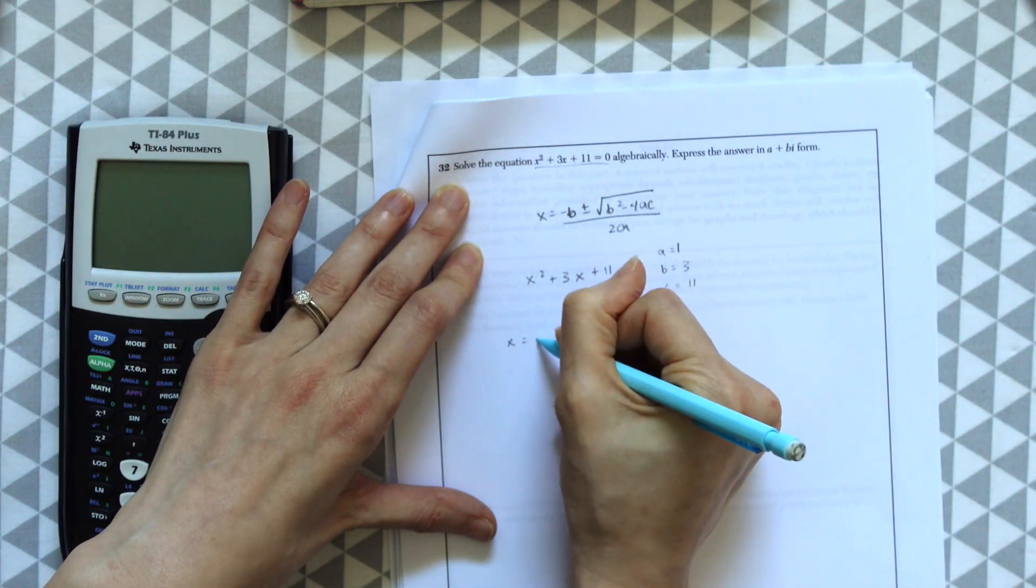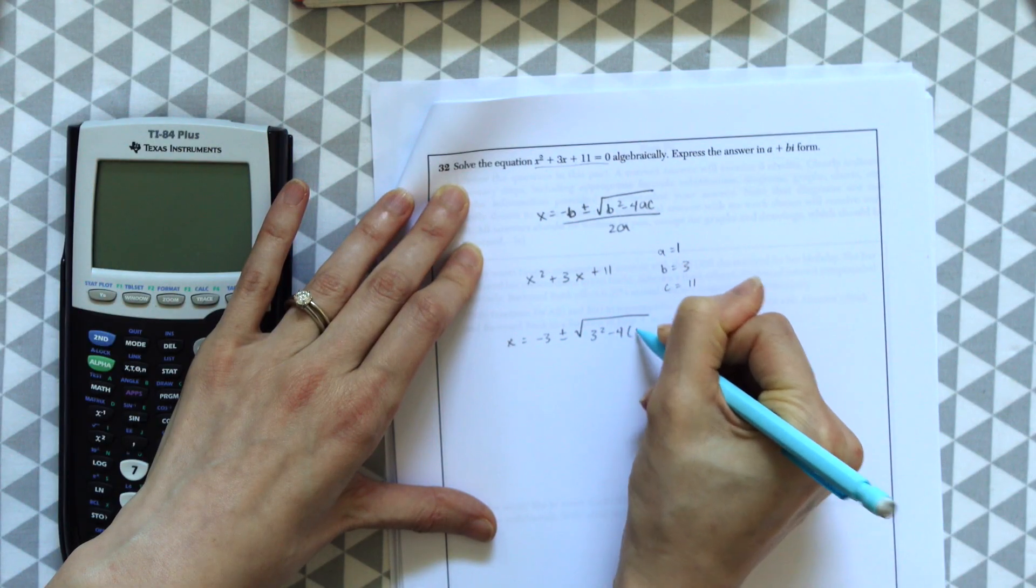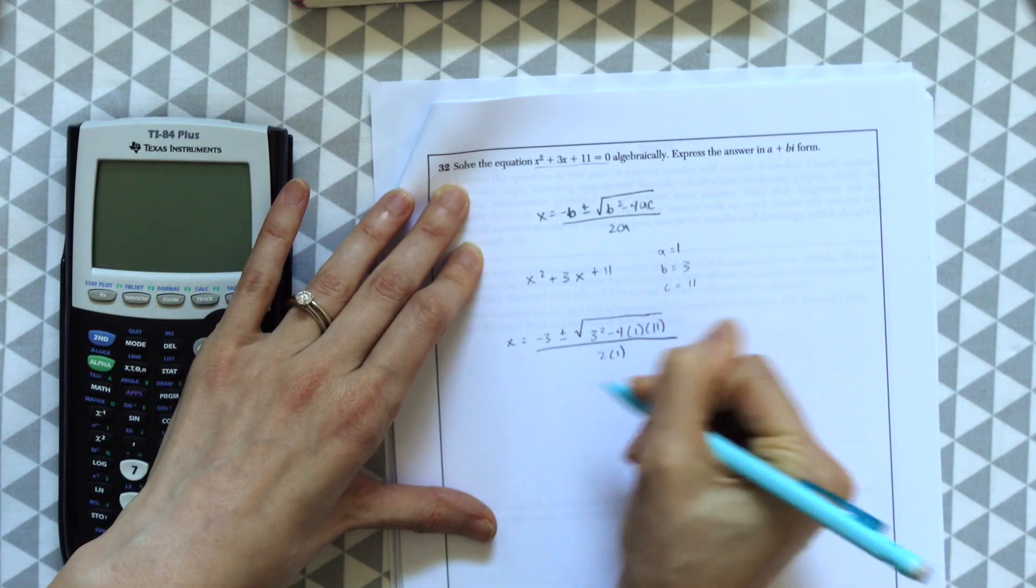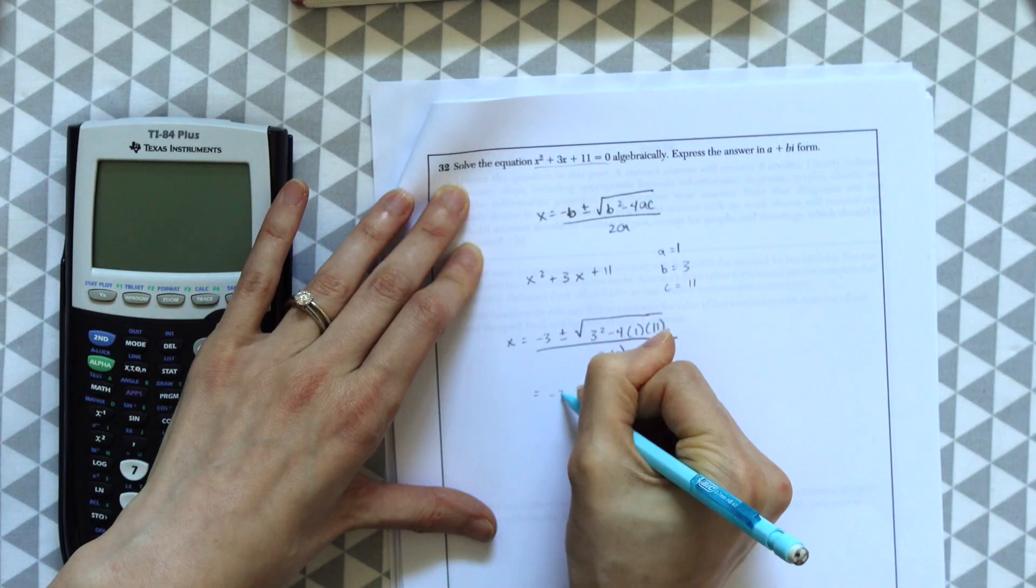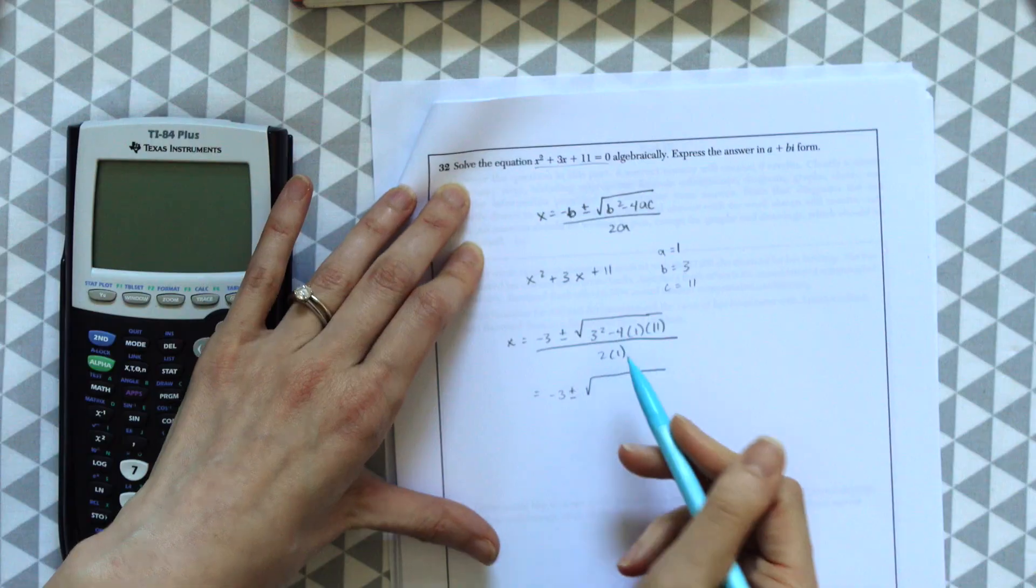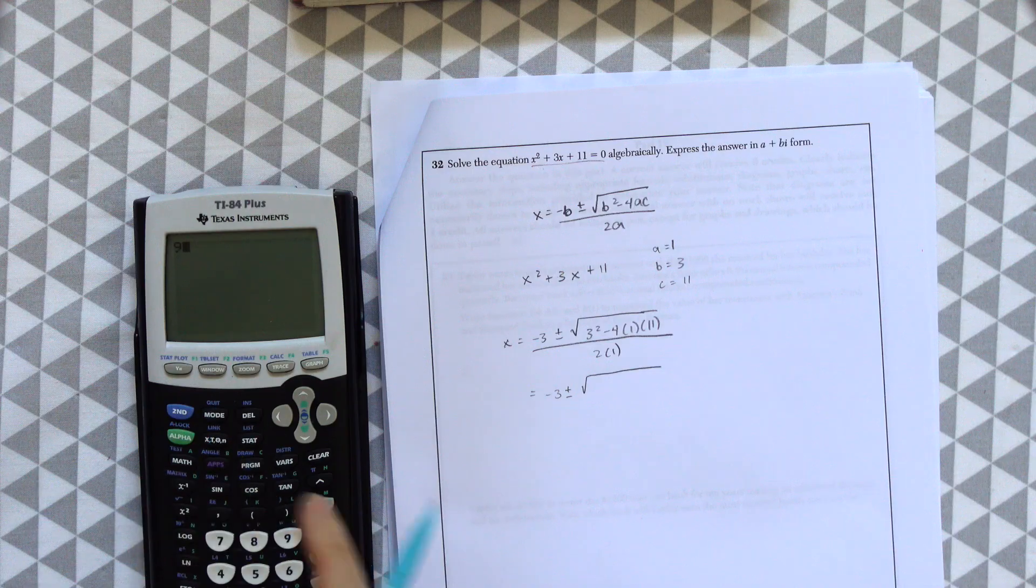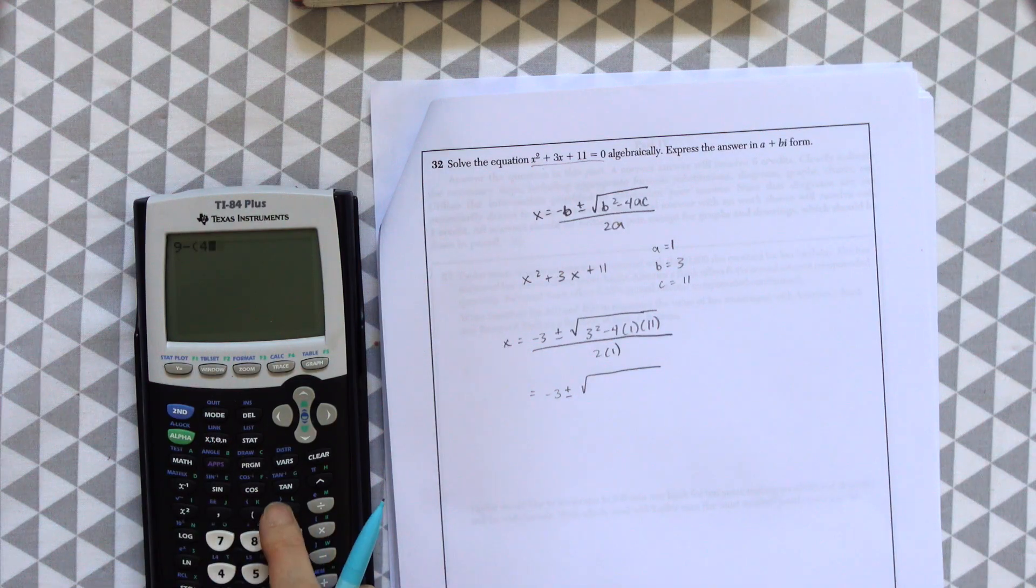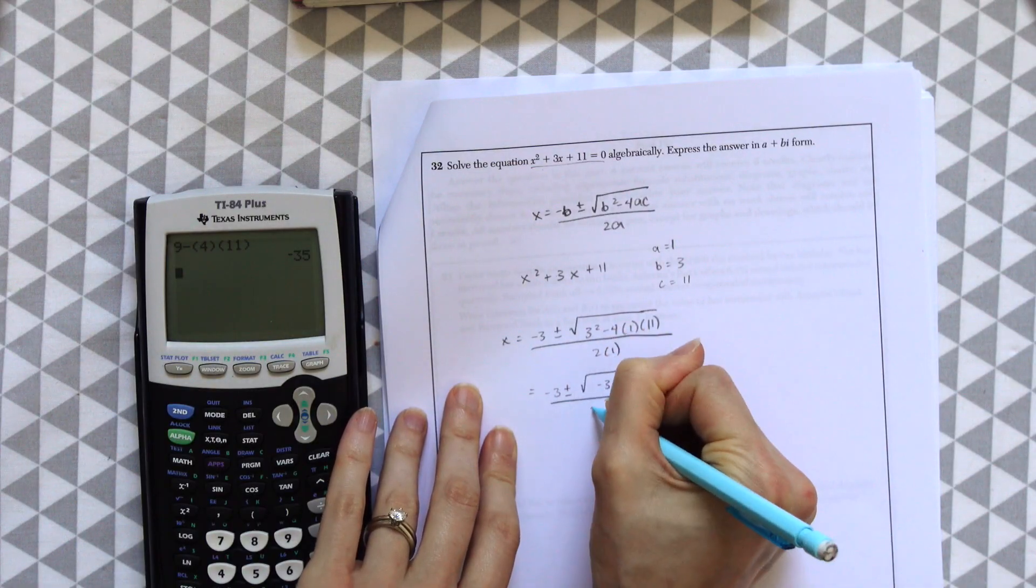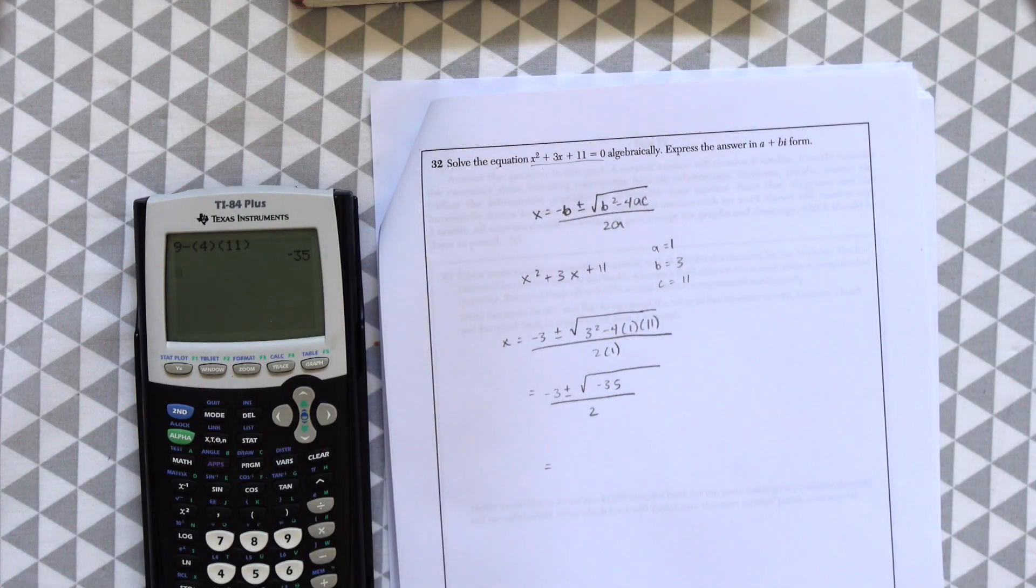So x is equal to negative 3, plus or minus, b squared minus 4 times a times c, all over 2 times a. So to solve this, I like to do this one step at a time, always starting with everything that's under the radical. So I'm going to skip ahead and do 3 squared, which is 9 minus 4 times 11. And we get negative 35 over 2.